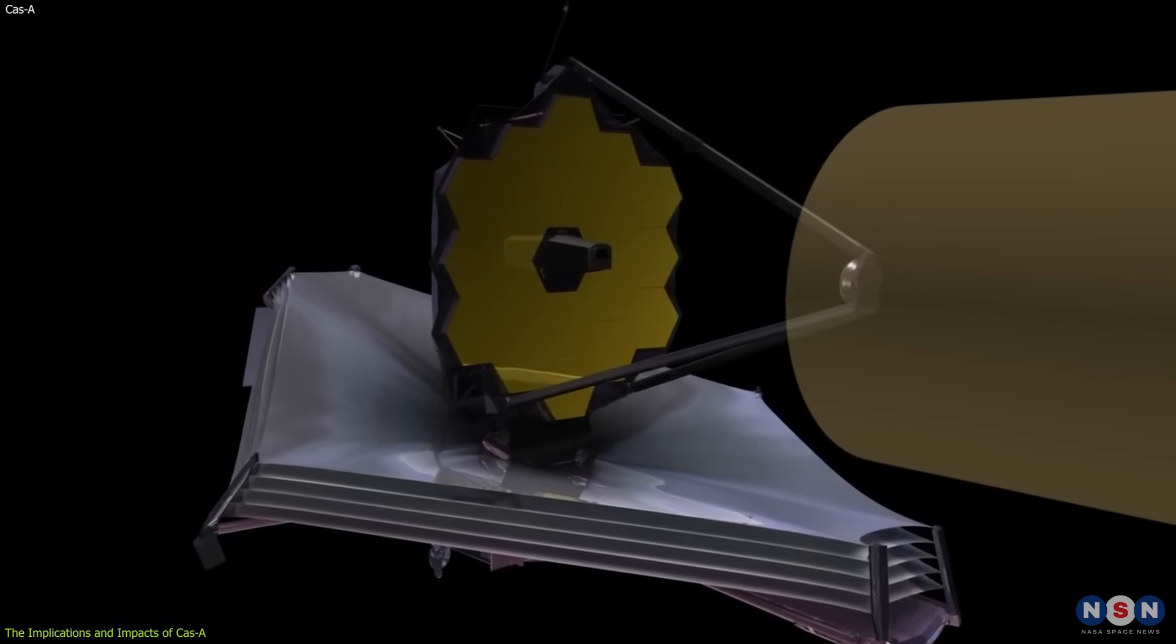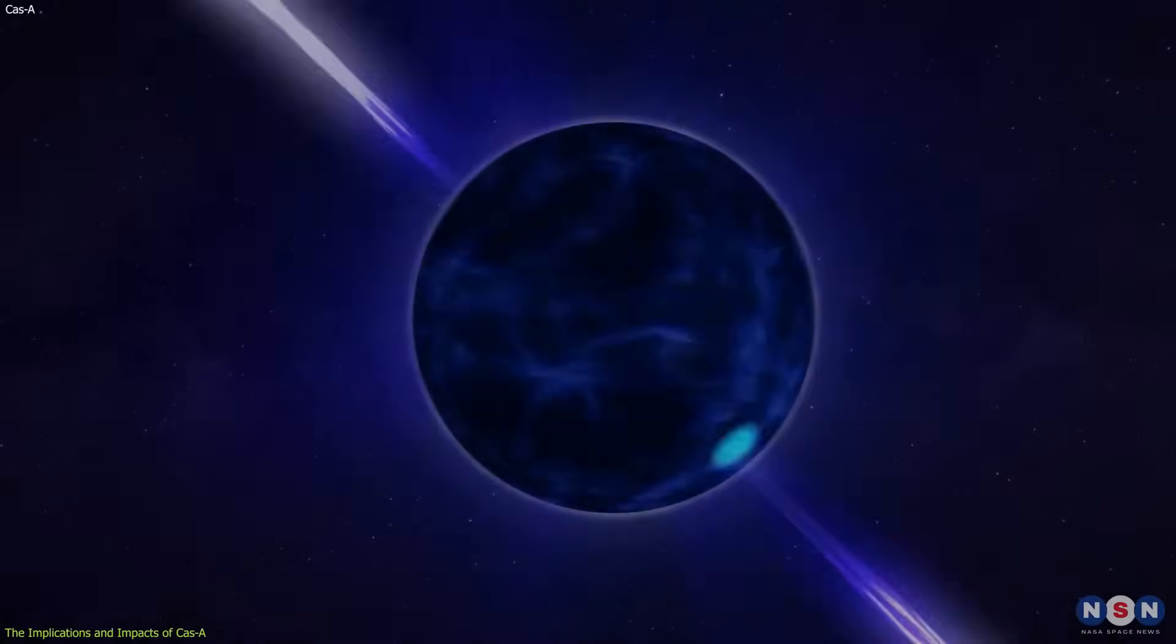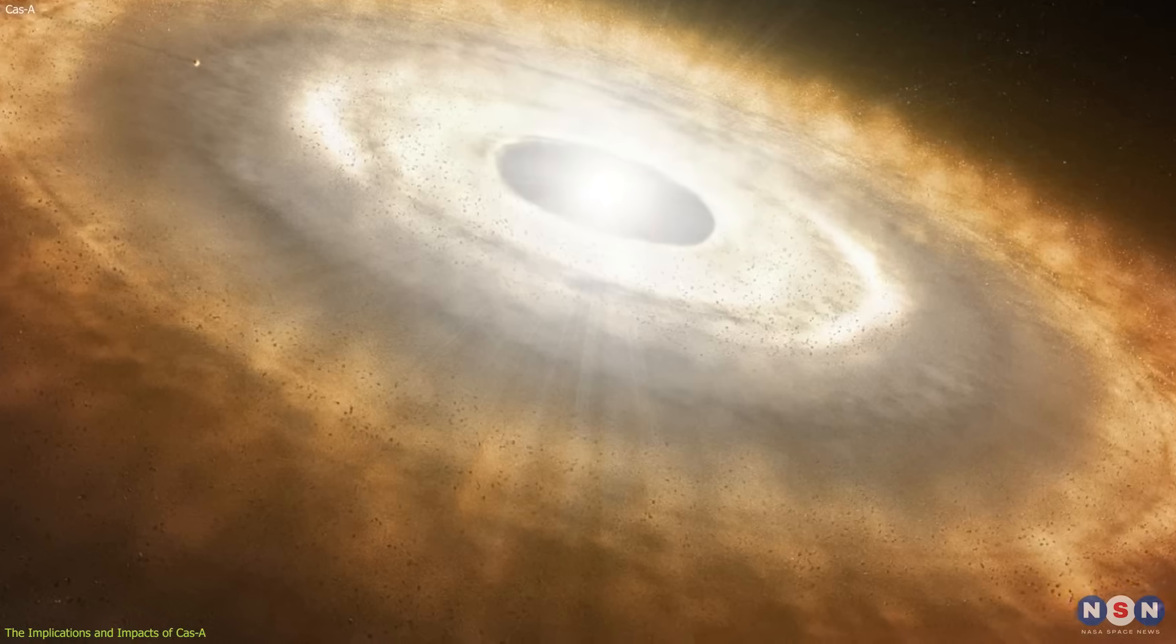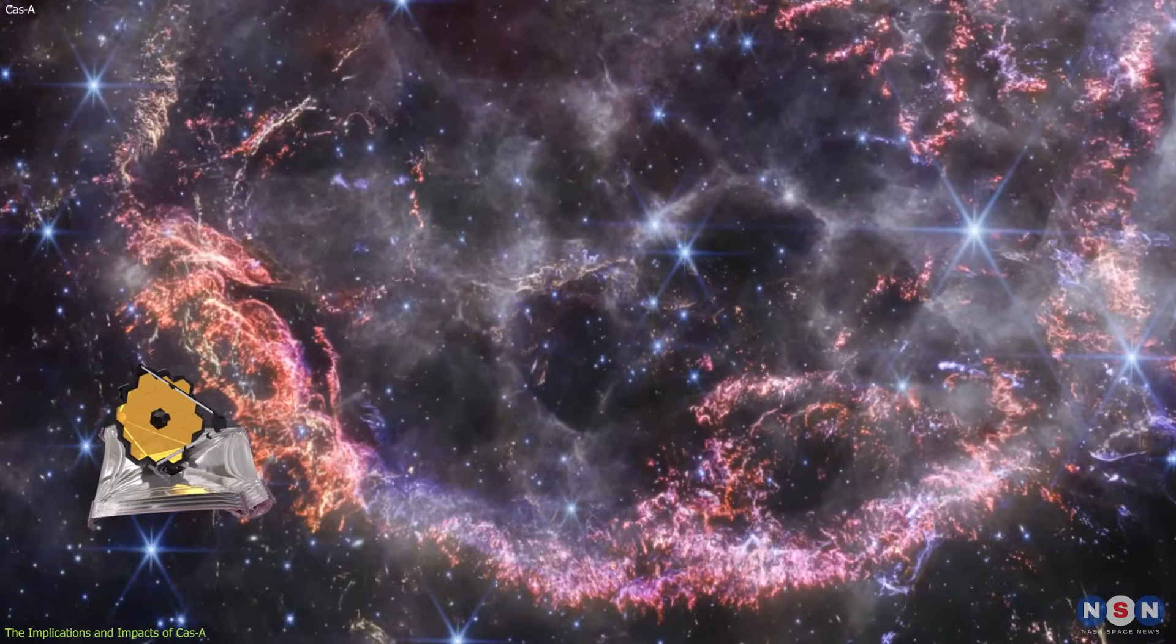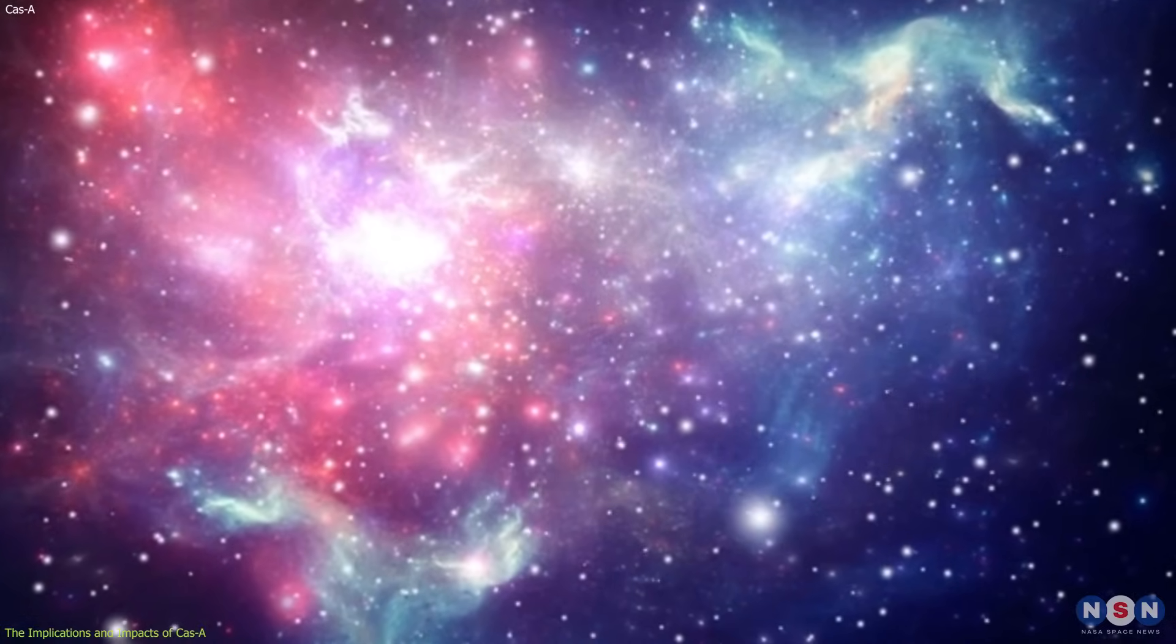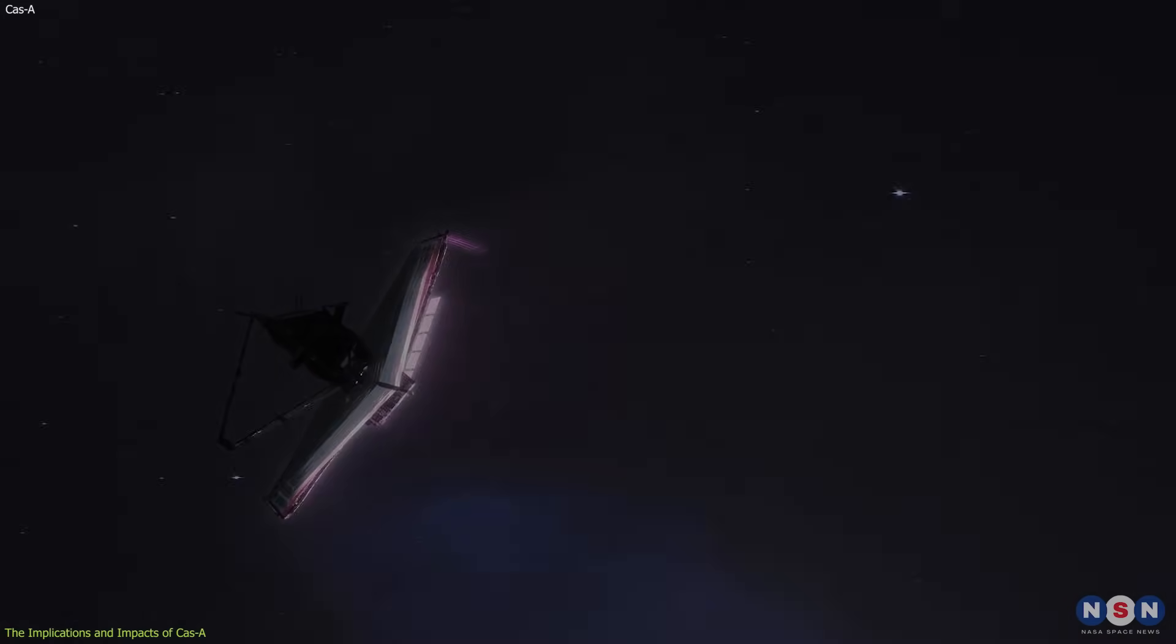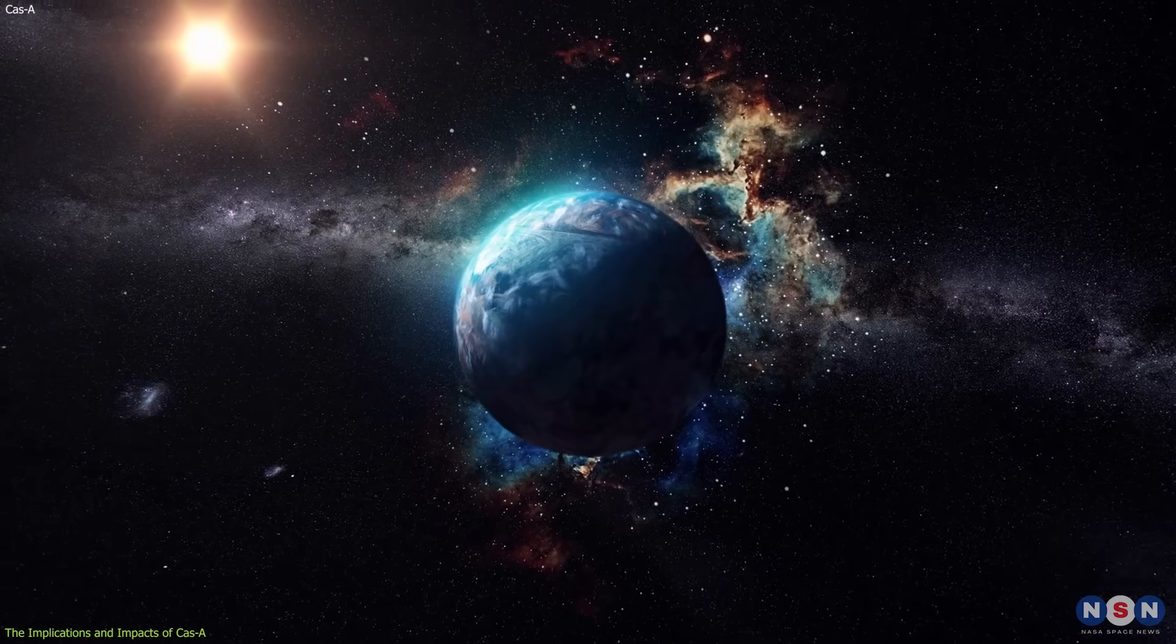The results also have some limitations and challenges that the telescope and the NIRCam face. For example, the NIRCam can't see the coolest and faintest parts of the supernova remnant, such as the neutron star that is the core of the exploded star, or the circumstellar material that is the original envelope of the star. It also can't resolve the smallest and finest details of the supernova remnant, such as the individual grains of dust and the molecular structures. James Webb also has to deal with the technical and operational difficulties of being in a remote and harsh environment, far away from Earth and human intervention.